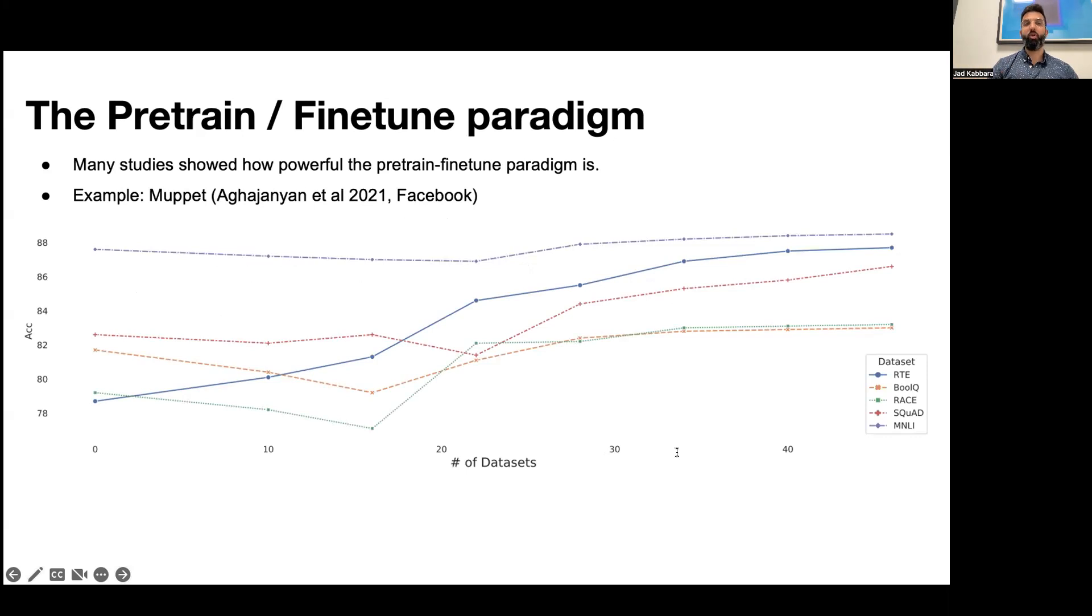The accuracy performance of learning models kept going up across many popular benchmarks like MNLI or SQUAD or others.